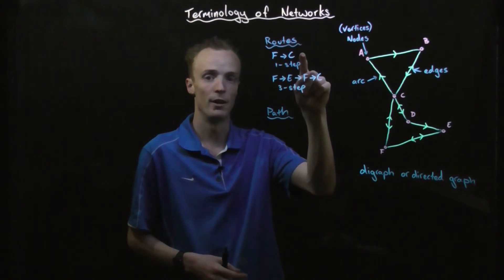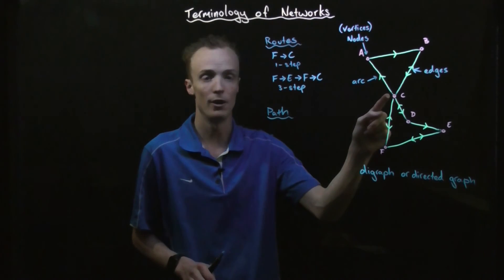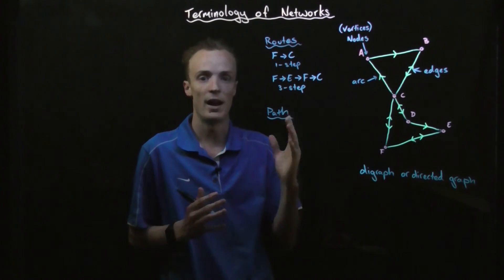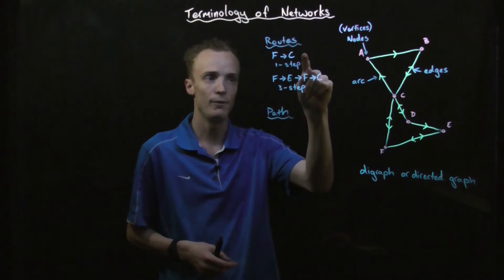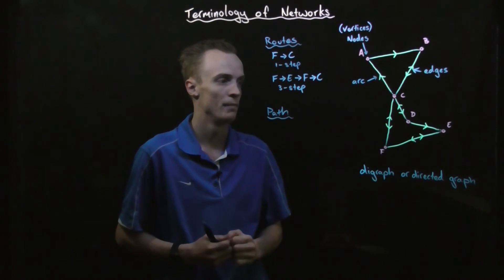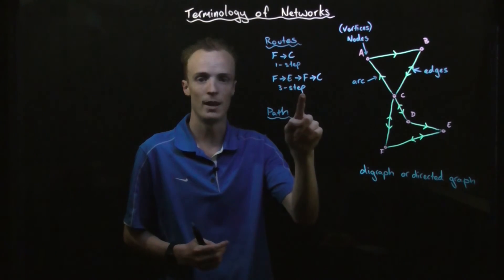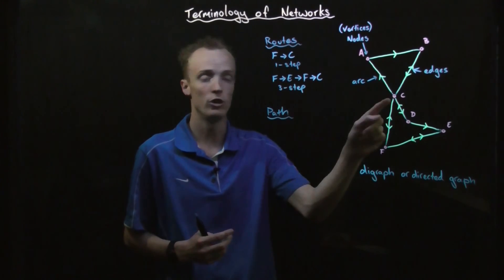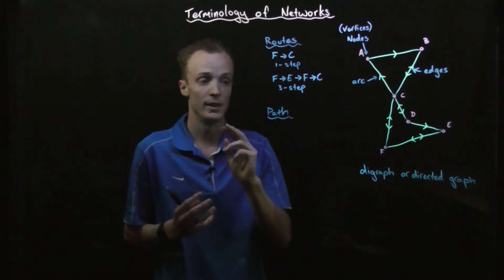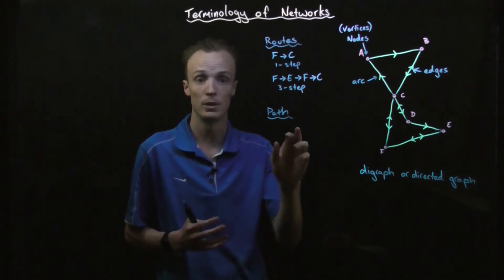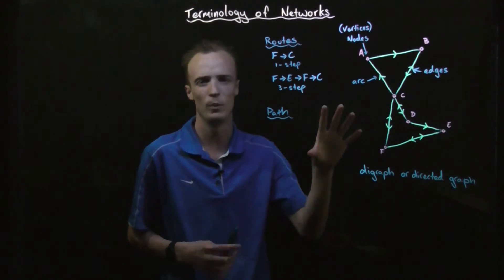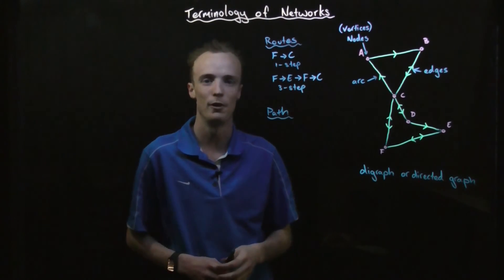Now if we look at this first one, where we start at node F and travel through to node C, we start at one node, finished at a different node, and we never visited any nodes twice. So the F through to C, that one step, is referred to as a path, which is a type of route. However, in this three step one, whilst we started at node F and finished at node C, so two different nodes, we actually traveled through node F twice. So that means that this one here isn't referred to as a path. It's still a route, but it's not a path. Now it's really important to become very comfortable with this terminology as we make our progression through matrices.